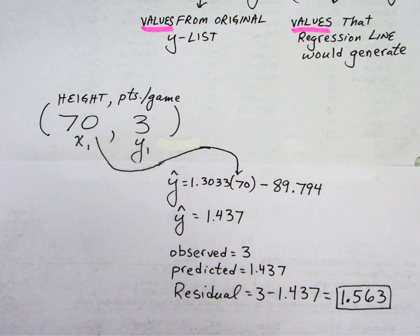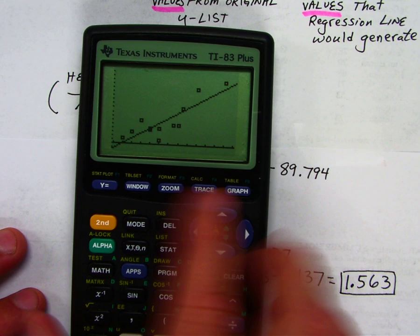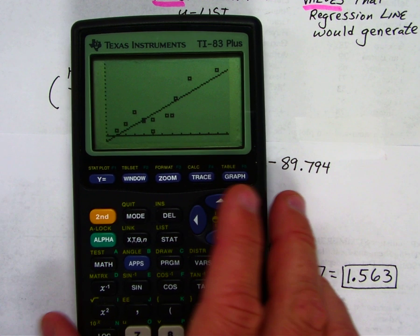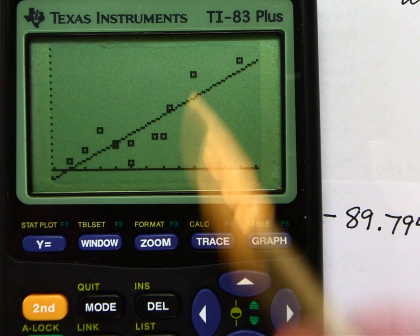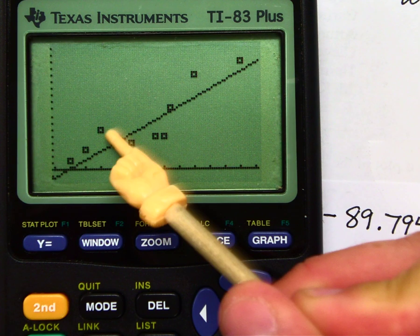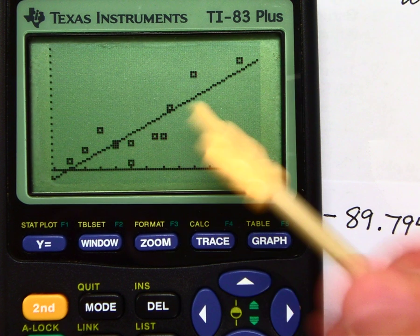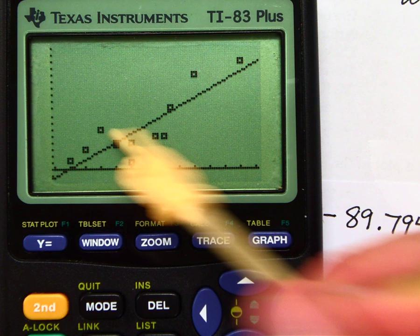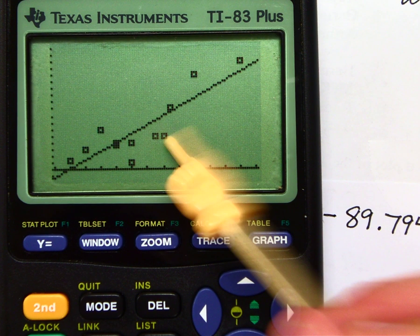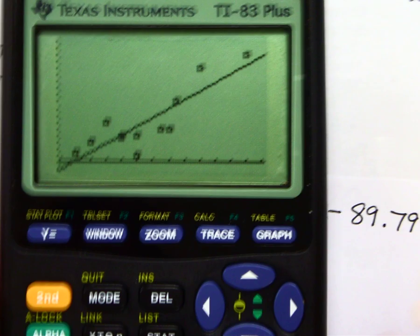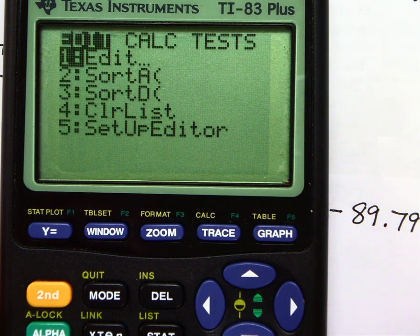Now if you're asked to calculate all the residuals, notice that there are 12 points in my data set here. That would take a long time to do by hand. What I want you to notice is that some points are above the regression line, some points are below the regression line. The points that are above the regression line will have a positive residual. The ones below the regression line will have a negative residual. And by definition, if you add up all the residuals, it's going to equal zero.